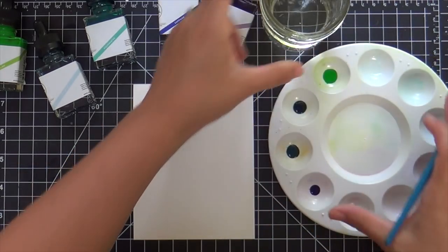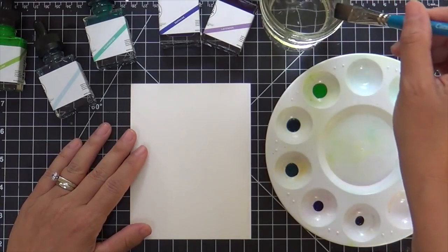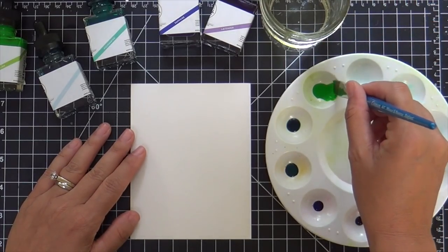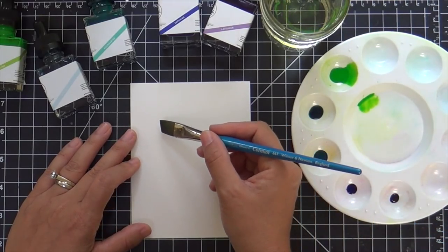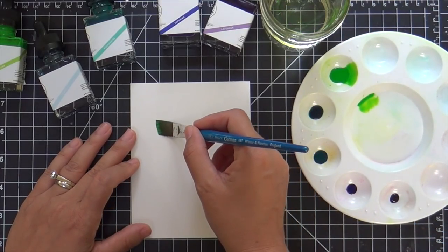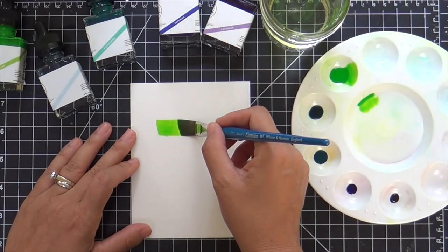So I have some Arches watercolor paper here. I think it's the Cold Press, a little bit of water and a cheap brush. I'm going to paint very simple stripes. Nothing fancy.